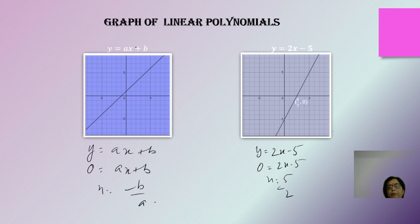If the coefficient of x is 0, then y becomes equal to the constant b. In that case, we will have a line parallel to the x-axis. If y is +b, the line will be parallel to the x-axis above it, and if y equals -b, the line will be parallel to the x-axis below it.